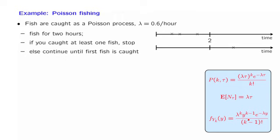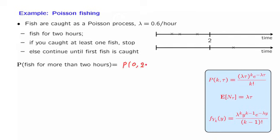The first question is: what is the probability that you get to fish for more than two hours? You get to fish for more than two hours if and only if you didn't catch any fish during the first two hours. So this is the probability of catching zero fish in the first two hours.